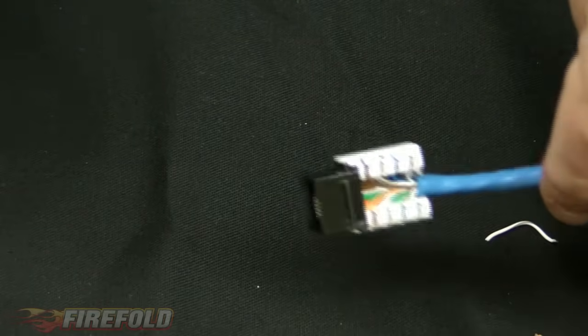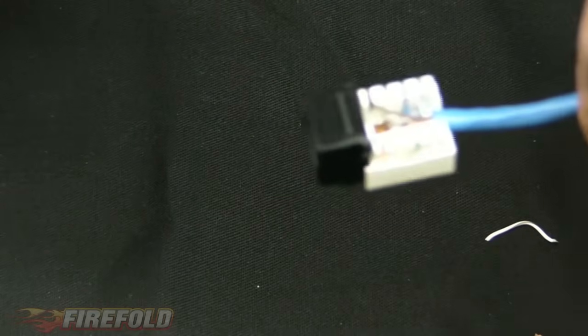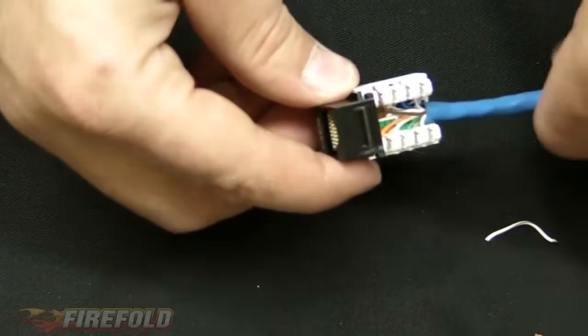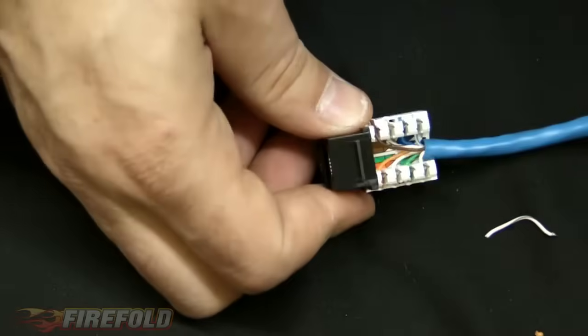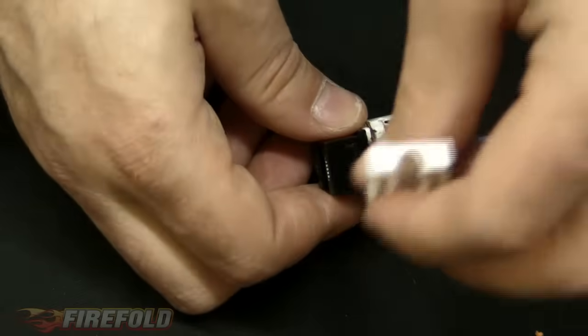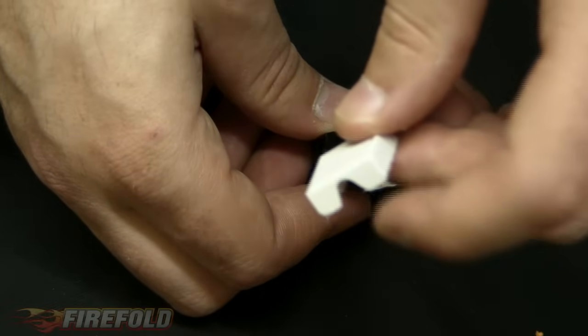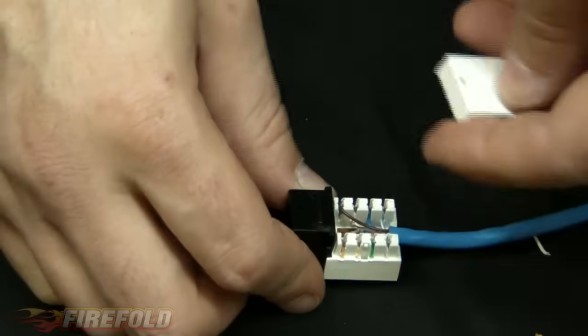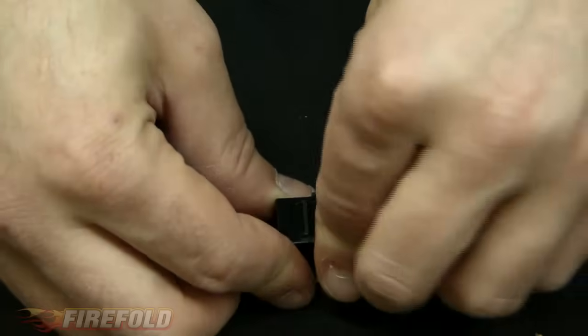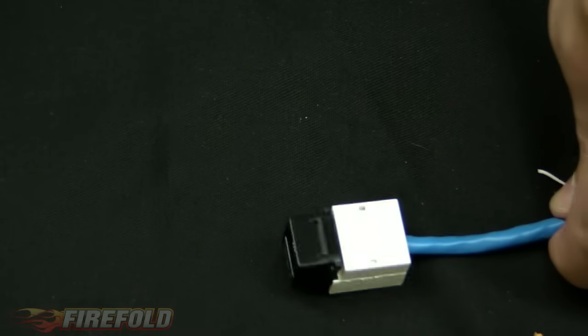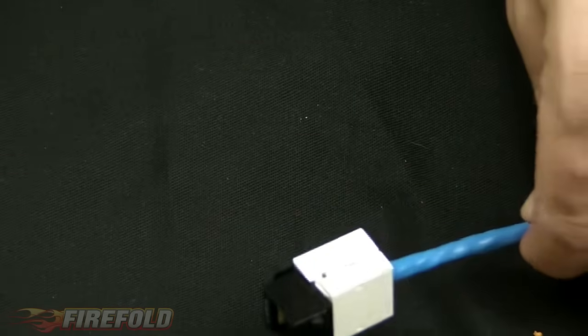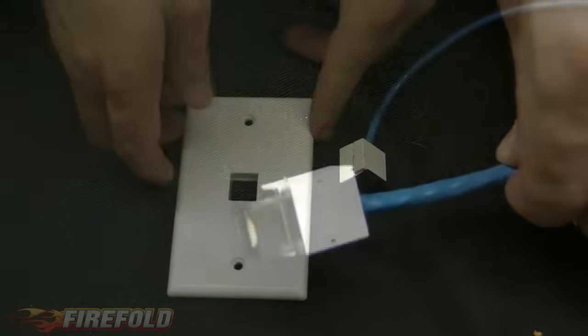And there, we have our completed Cat5 Keystone Jack. And what you're going to want to do, you're going to want to take your dust cover, this one right here. And you're going to want to place this end over the Cat5 cable, like so. So you don't have to worry about any electrical interference. And there, you have your Cat5 Keystone Jack completed.